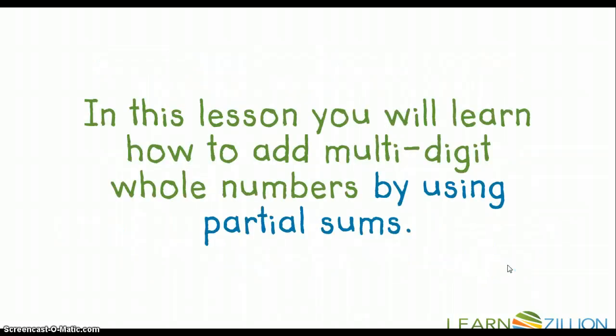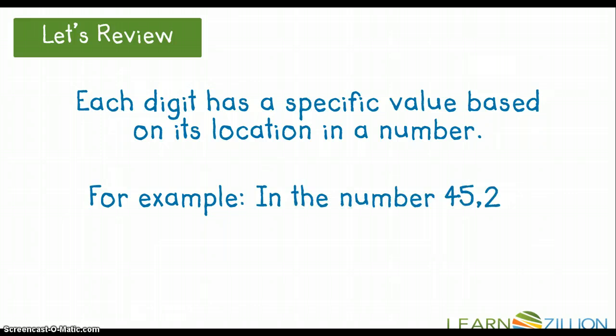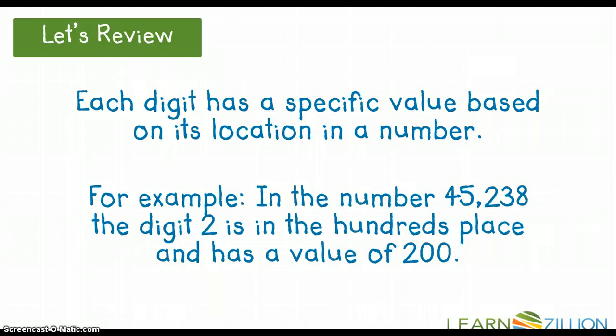In this lesson, you will learn how to add multi-digit whole numbers by using partial sums. So let's review. Each digit has a specific value based on its location and a number. For example, in the number 45,238, the digit 2 is in the hundreds place and has a value of 200, not just a value of 2. If we look at the location of the 2 in the number, it's in the hundreds place and it has a value of 200.